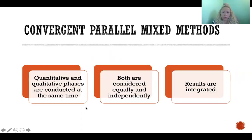Starting with convergent parallel mixed methods. In a convergent parallel design, you're conducting the qualitative and quantitative phases all at the same time. There might be a quantitative component of the study and a qualitative component of the study, and both are being conducted separately and both are considered to be of equal value and equal weight. They're both analyzed separately, and then at the end of the study, when you've completed the qualitative and quantitative phases, you would integrate those results and hopefully they would complement one another.